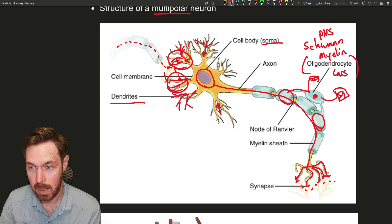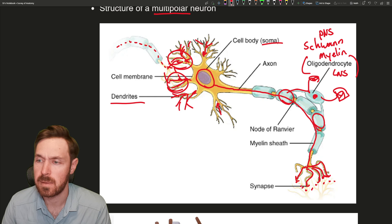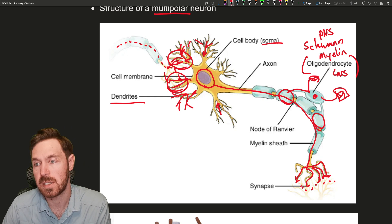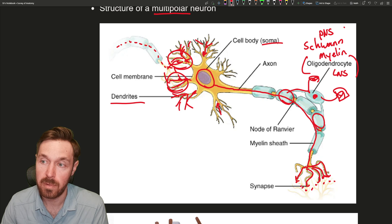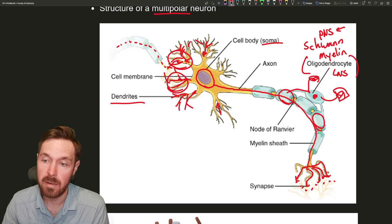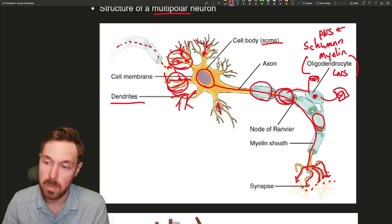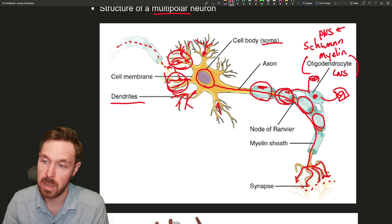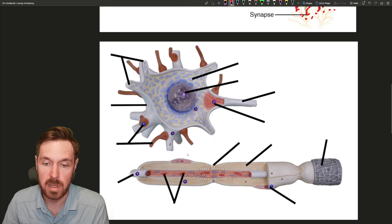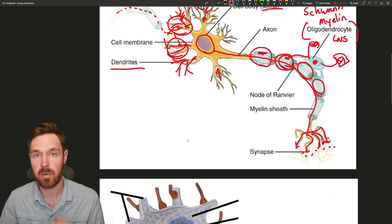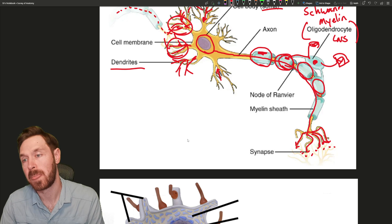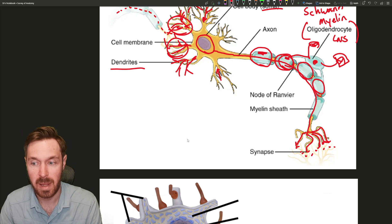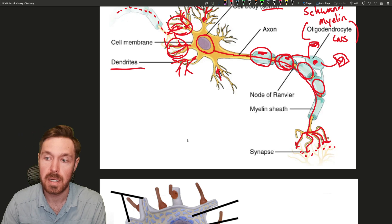These oligodendrocytes are one example as to why the central nervous system is not regenerative, whereas the peripheral nervous system does have some regenerative capability to it. Because these Schwann cells, every individual node would be its own Schwann cell with a nucleus on it. They can form these little protective tubes for the new axon to grow and to sprout. That's one reason why your peripheral nervous system has some slightly regenerative capability to it.